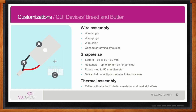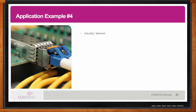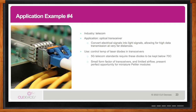In the telecom industry, the application is an optical transceiver — a device that converts electrical signals into light signals, enabling high data transmission over very long distances. This is a critical piece of 5G technology. Peltiers can be used to control the temperature of the laser diodes in the optical transceiver, as 5G telecom standards require those diodes to be kept below 70 degrees Celsius. The small form factor of optical transceivers, combined with limited airflow and the need for precise temperature control, presents a perfect opportunity for Peltiers.